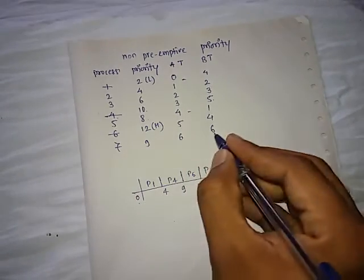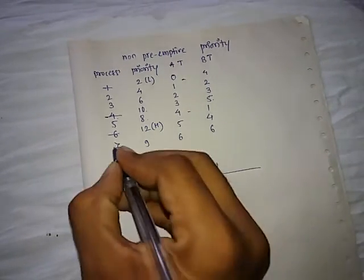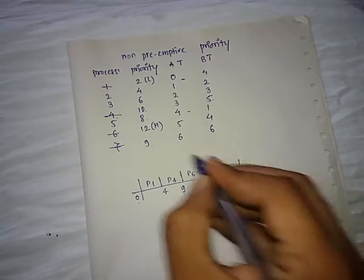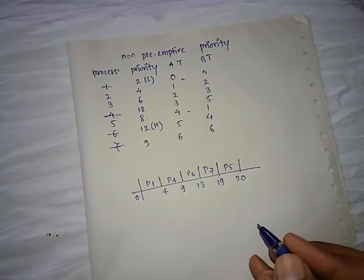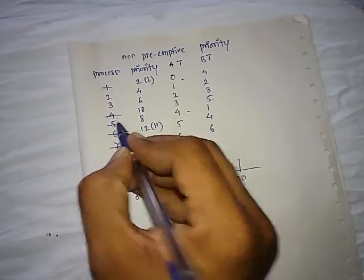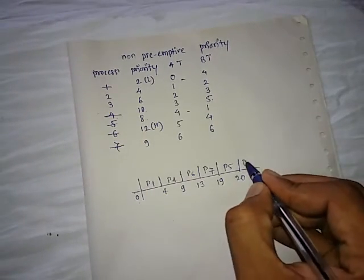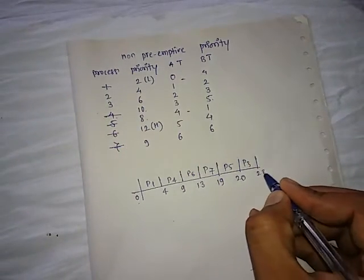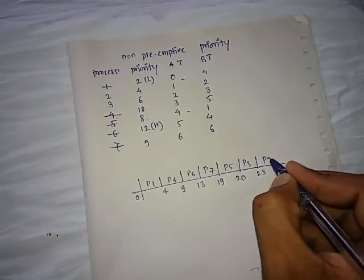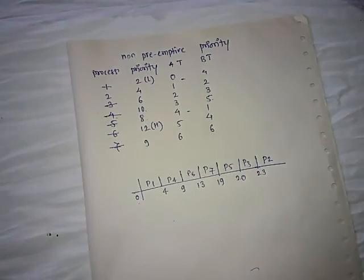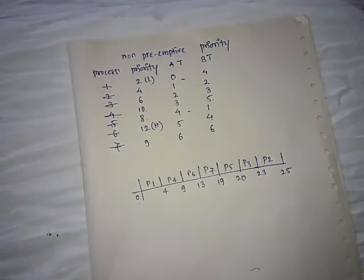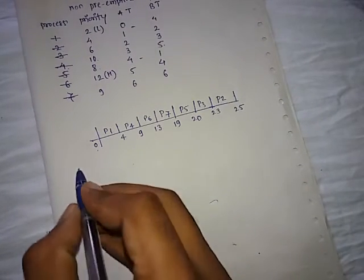Next is priority 9, which is P7 with burst time 6, finishing at time 19. Then priority 5 is P5 with burst time 1, finishing at time 20. Then P3 has higher priority than P2, burst time 3, finishing at 23. Finally P2 with burst time 2 finishes at 25. So the Gantt chart is now complete.